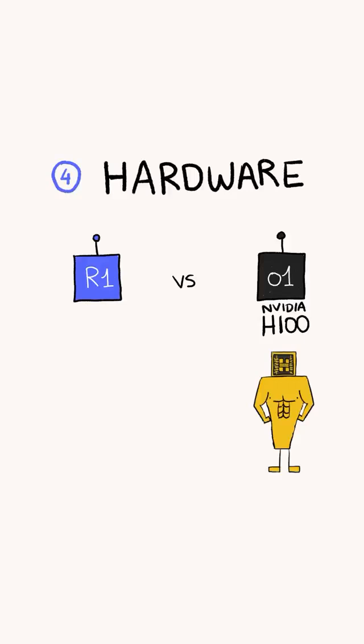Finally, the hardware. O1 was trained on NVIDIA's H100 GPUs, while DeepSeek used H800s, which are a modified and weakened version of the H100s, due to the US's export controls.